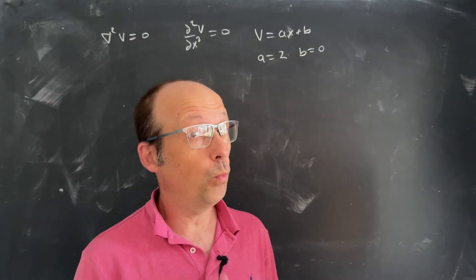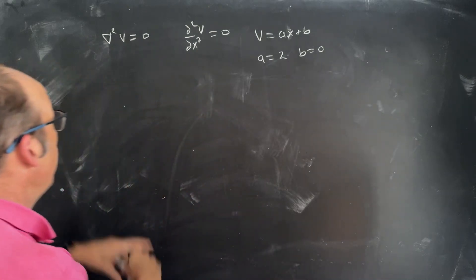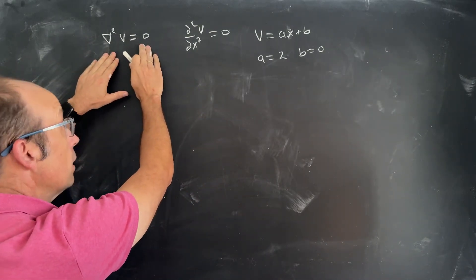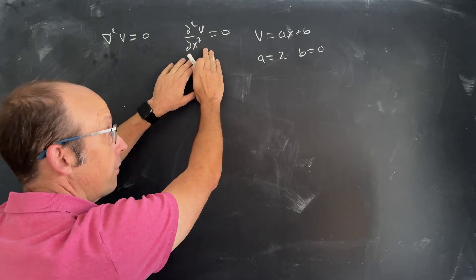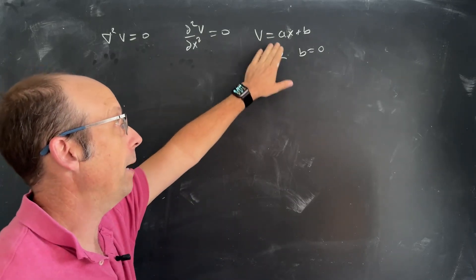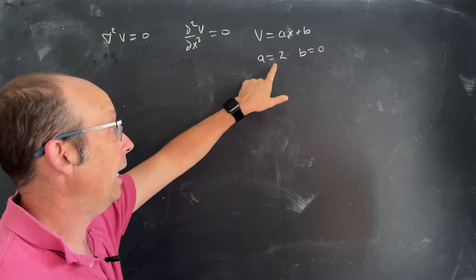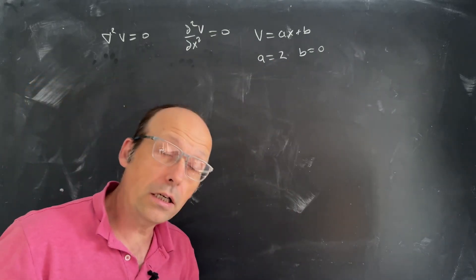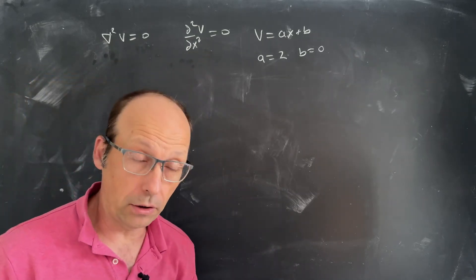Electrodynamics — finding electric potential in one dimension for empty space. We did that in a previous video. So if I have the Laplacian with no charge, the charge density is zero, in one dimension that becomes a second partial with respect to x. It's a very easy thing to solve — I get a line. I picked boundary values such that at x equals zero, v is zero, and at x equals one, v is two. But I want to do this solution another way — I want to solve this equation numerically.